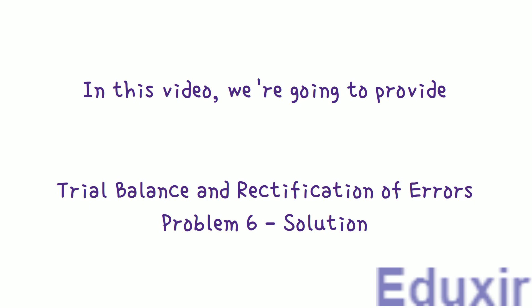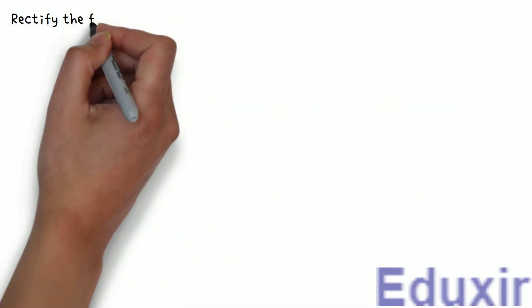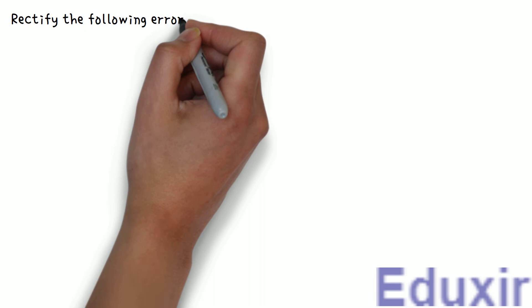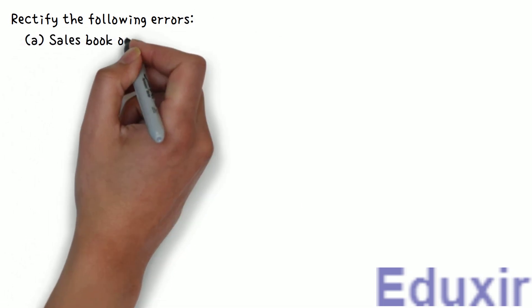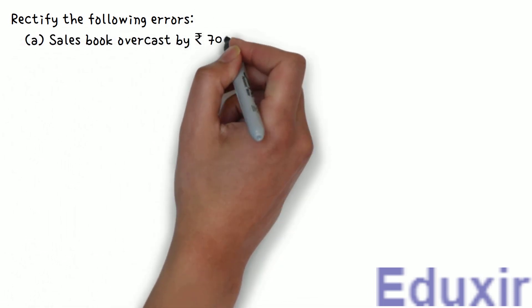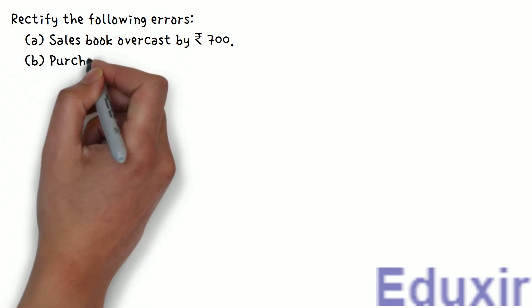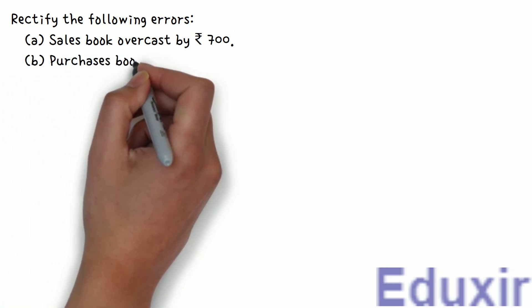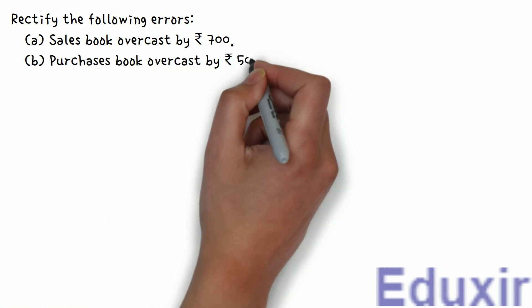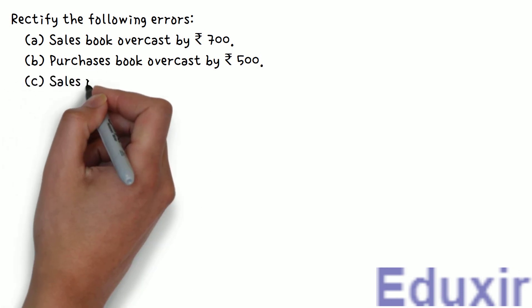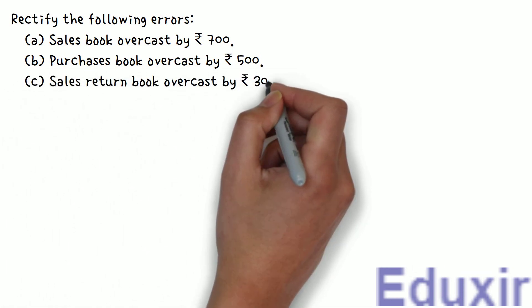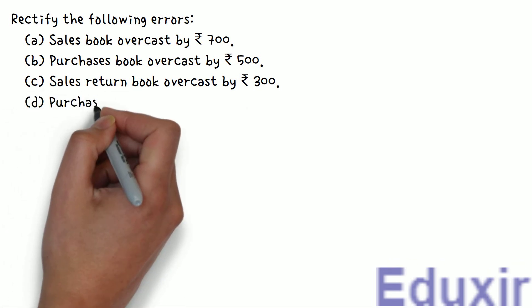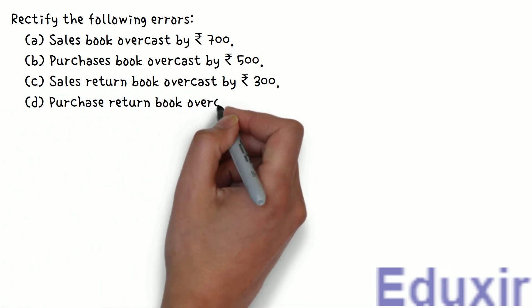The problem statement is as follows: Rectify the following errors. A: Sales book overcast by 700 rupees. B: Purchases book overcast by 500 rupees. C: Sales return book overcast by 300 rupees. D: Purchases return book overcast by 200 rupees.